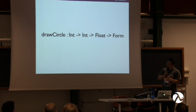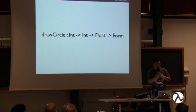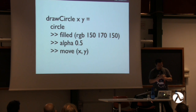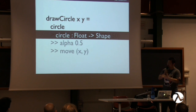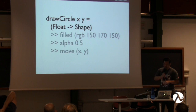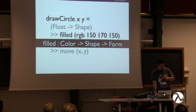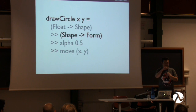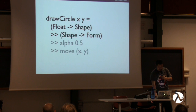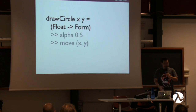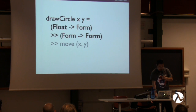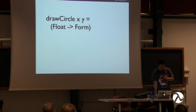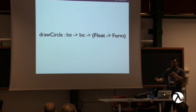Our draw function has a signature where it takes two integers and a float and returns a form. We can rewrite this using function composition rather than calling individual functions — composing the different parts together to make a bigger function. A circle function takes a float and returns a shape; the filled function is partially applied so it takes a shape and returns a form. Using the double-arrow composition notation, we combine these two functions together. You can see how the composed functions give you back a function with the same overall type signature — even written in a completely different style.